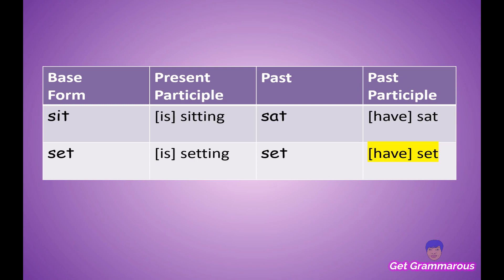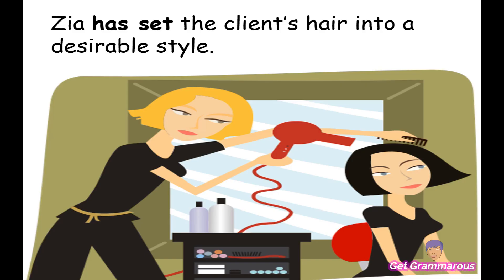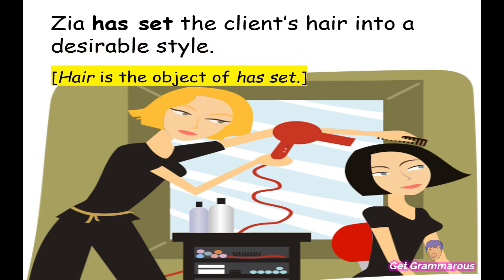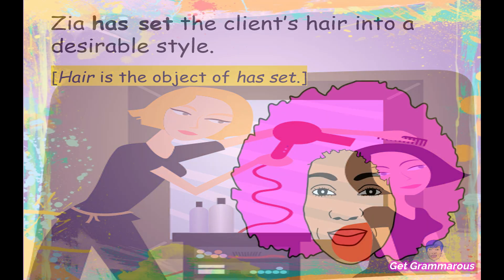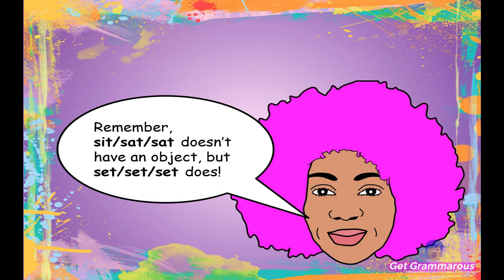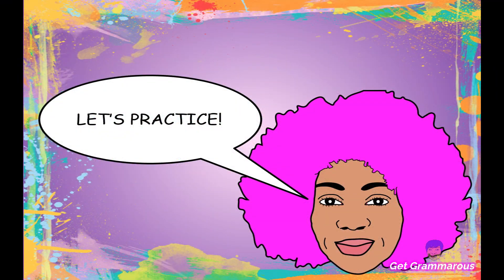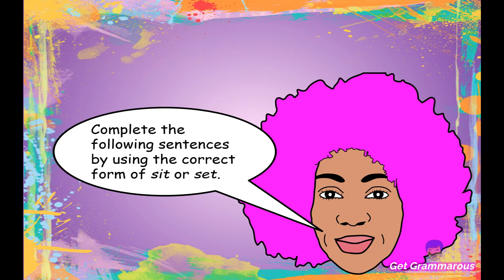For the past participle of 'set': 'Zia has set the client's hair into a desirable style.' 'Hair' is the object of 'has set' — it receives the action of the verb. Remember: sit, sat, have sat doesn't take an object, but set, set, have set does.